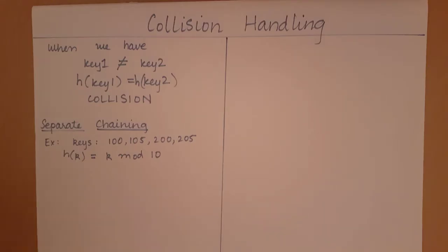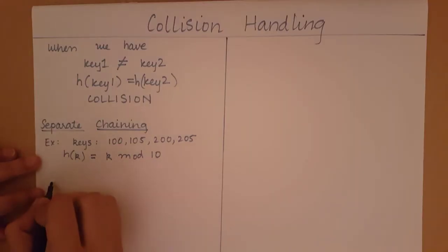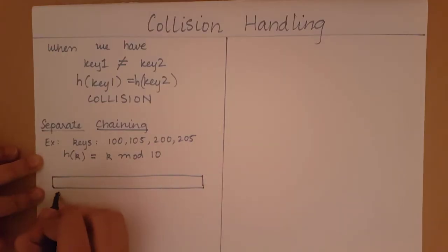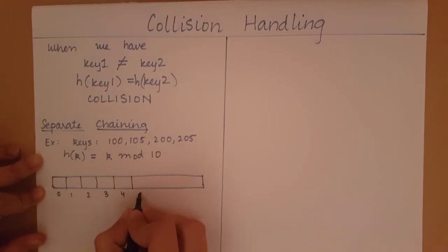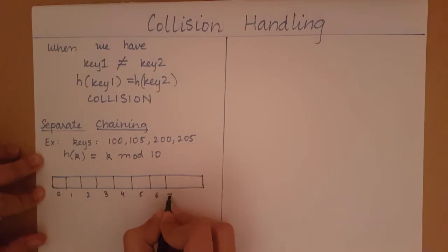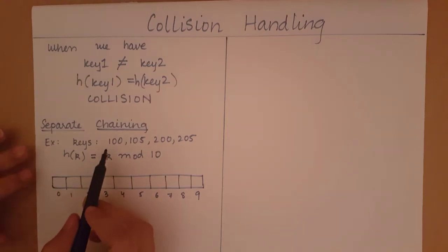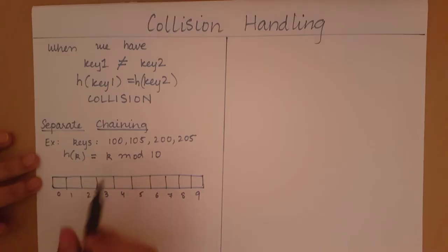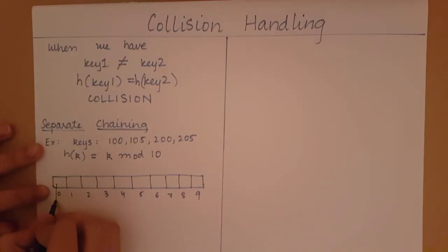Now, how are we going to add this to our bucket array? Since our range, or capital N, is going to be 10, we are going to have a bucket array of elements ranging from 0 to 9. This is going to be our bucket array. Let's take the first key: 100 mod 10 is equal to 0. So, it's going to be filled in at index 0. At index 0, I am going to start a linked list with my key 100.